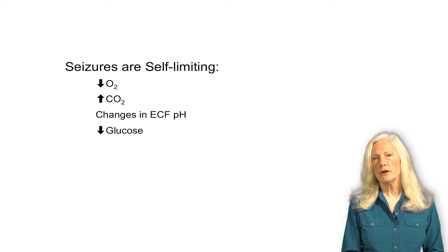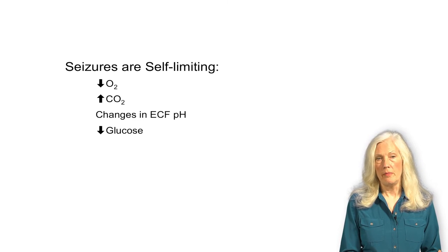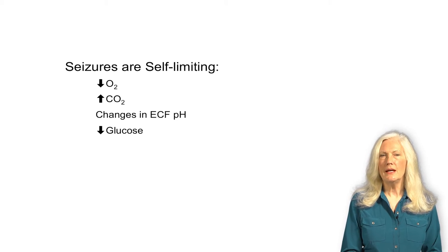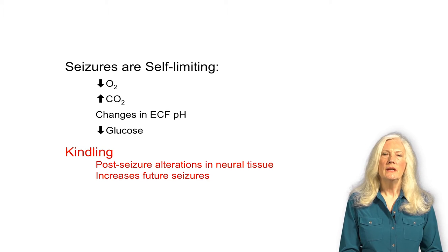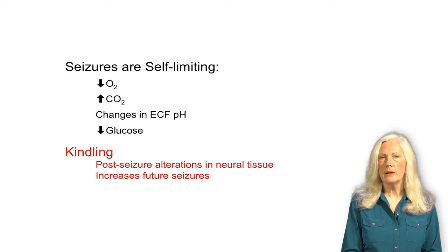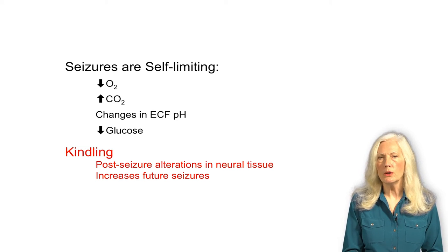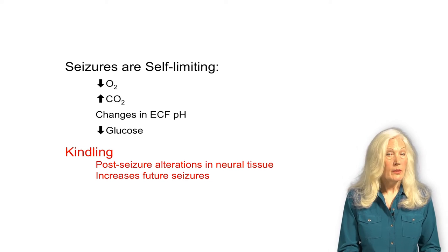Most seizures that result from an epileptic condition are self-limiting. This may be because the tissue can't support a high level of activity because of either insufficient oxygen — hypoxia — or too much accumulation of CO2 with an associated change in the pH of the microenvironment, or insufficient glucose. One reason it's important to treat epileptic conditions is that each time a seizure occurs, there's a phenomenon called kindling. After the seizure, the tissue around the areas of the epileptic foci changes and becomes more likely to be recruited by future seizures, making the tissue not only more excitable but also larger.